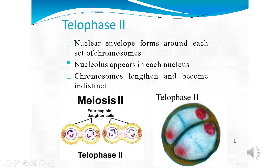In telophase 2, which is the end of meiosis, the two groups of chromosomes once again get enclosed by a nuclear envelope. Cytokinesis follows, resulting in the formation of a tetrad — meaning four haploid daughter cells are formed.